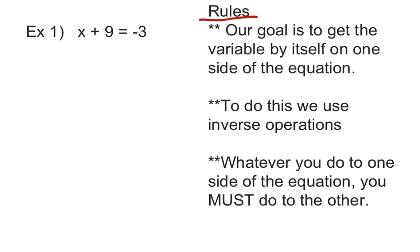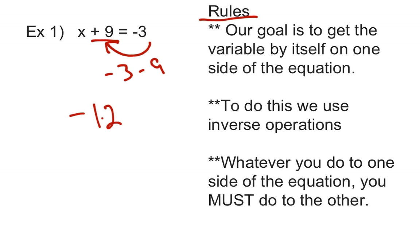Example 1 — you can see I have the rules off to the side already — says x plus 9 equals negative 3. Mental math tells me: what number plus 9 equals negative 3? Well, if I work backwards and do negative 3 minus 9 — because that's the opposite of adding 9 — negative 3 minus 9 gives me negative 12. So that's the answer I should get. But how do we mathematically show that process? Today it's all about learning how to show our work.